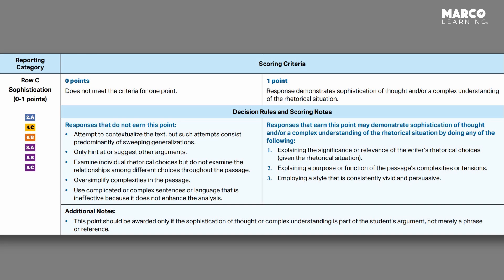The response demonstrates sophistication of thought and/or a complex understanding of the rhetorical situation. So there are two ways to earn this point. And remember something about sophistication — this is one of the only holistic points, the overall feeling points. The thesis point you either earn or you don't. Evidence and commentary is between zero and four. Sophistication is more up to the reader to say, 'I think that the ideas were sophisticated or the style was sophisticated.' So there's more than one way to earn it.